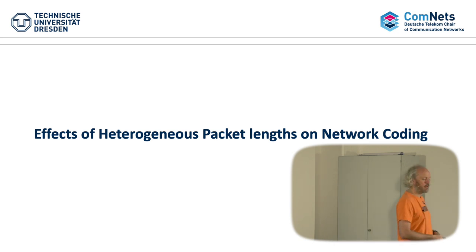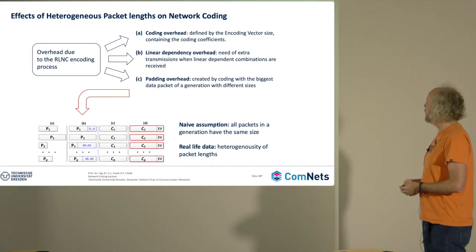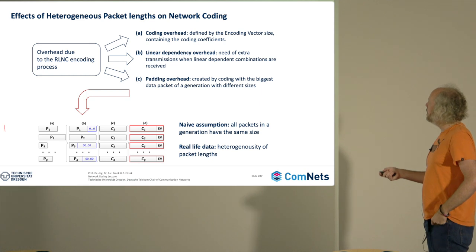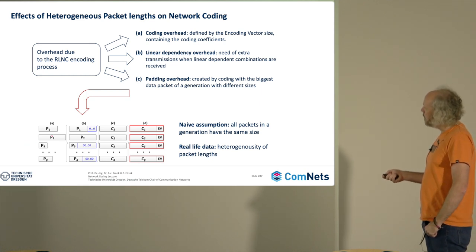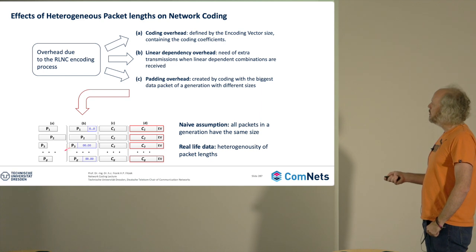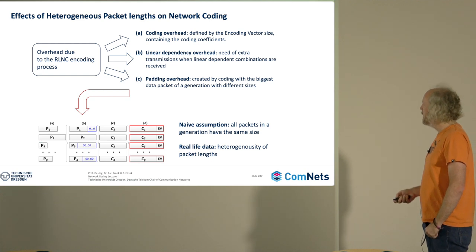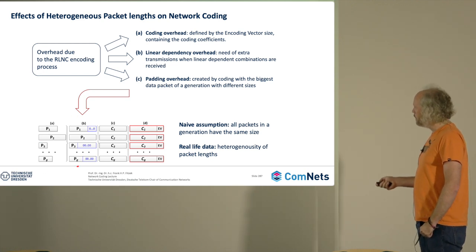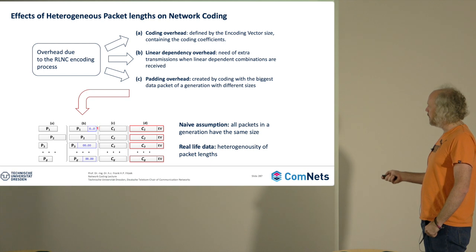The question is how do we deal with that. Here you see the problem. If you have p1, p2, p3, and pg, what you can do is just fill in some padding. The maximum packet length is here p2, and when you have the packets, you can create the coded packets.